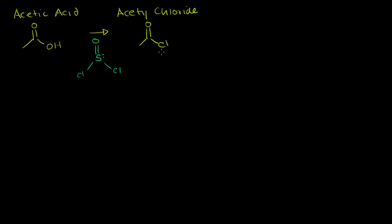Let's think about how this might occur. We start with acetic acid, which has an oxygen bonded to a hydrogen with two lone pairs. The thionyl chloride is redrawn in position — it also has a lone pair of electrons.